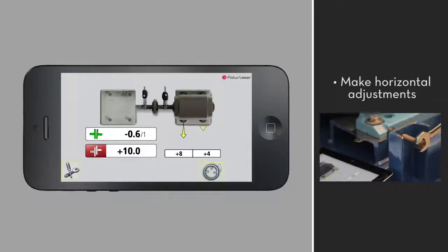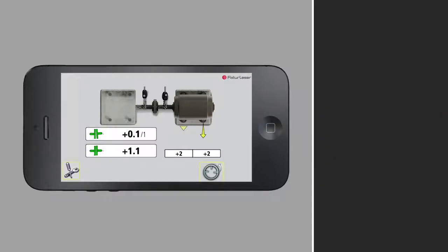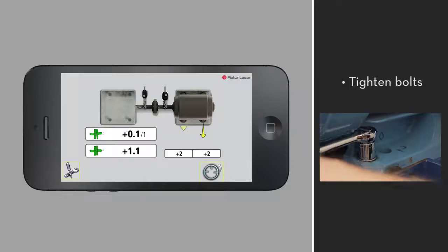Once the icons for offset and angularity are both green, you are within tolerance. Tighten the bolts on the movable machine and your alignment is complete.